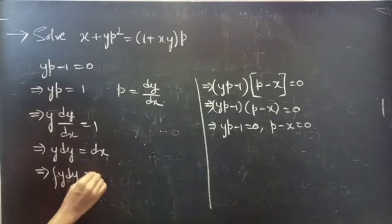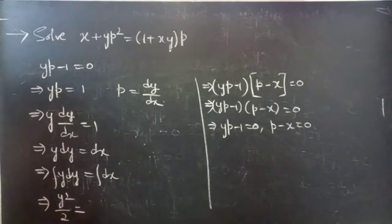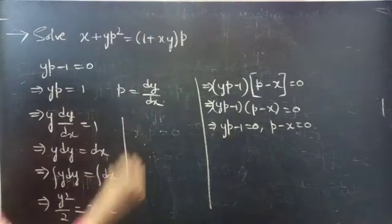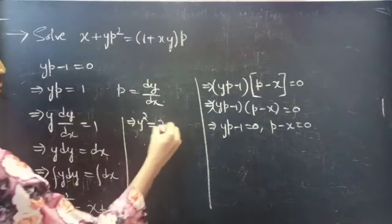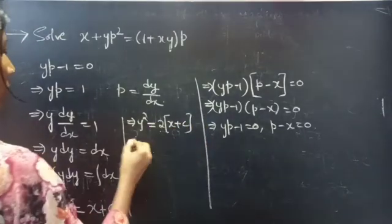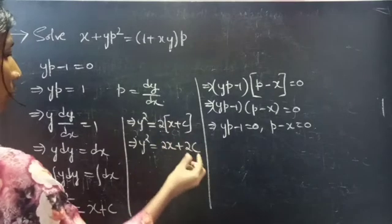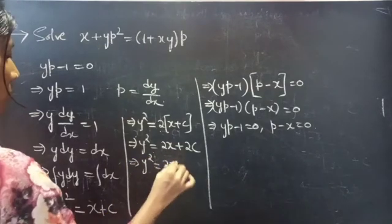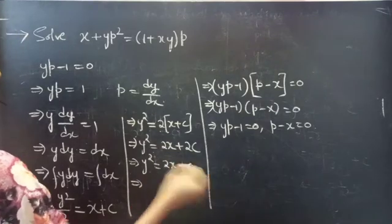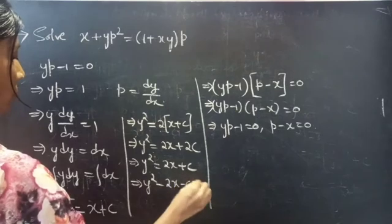Integrating both sides: the integral of y dy is y squared over 2, equals to the integral of dx which is x plus a constant. So y squared over 2 equals to x plus c, and multiplying through by 2 gives y squared equals to 2x plus 2c.